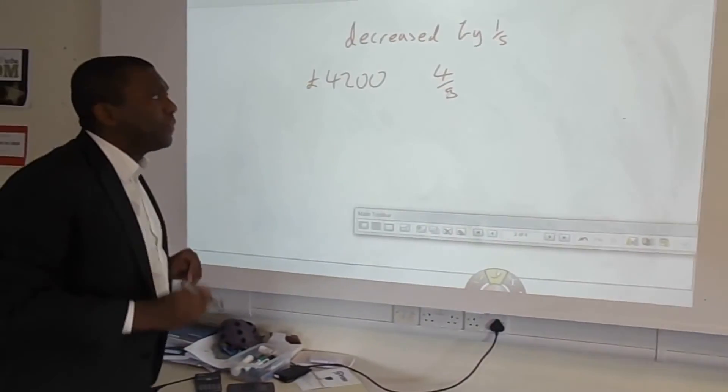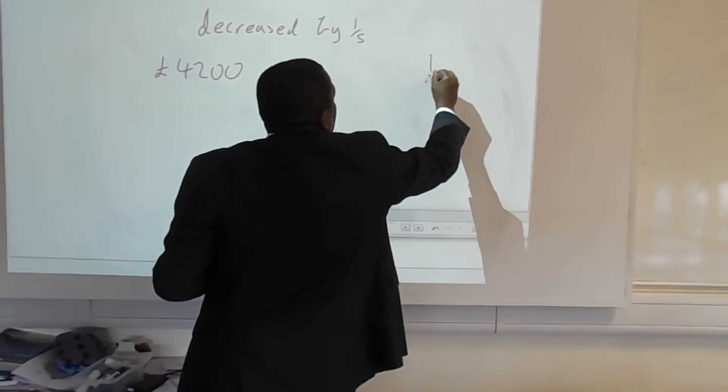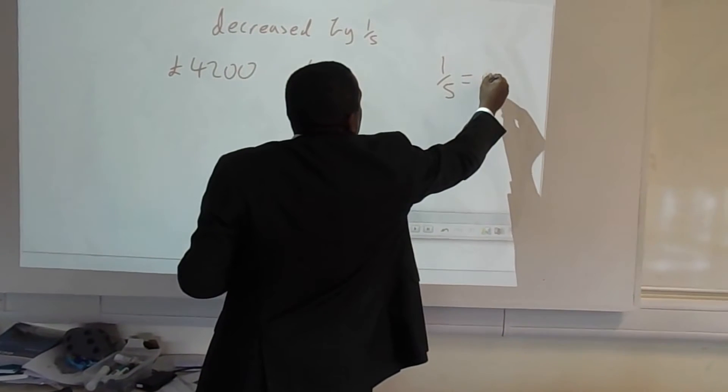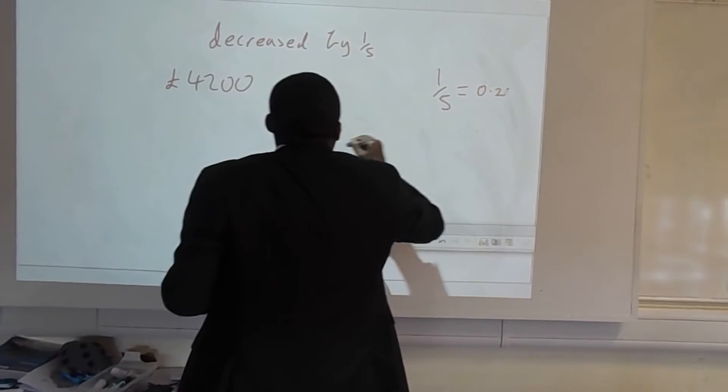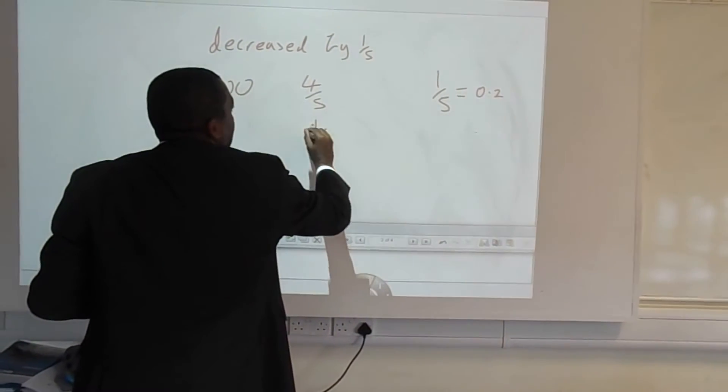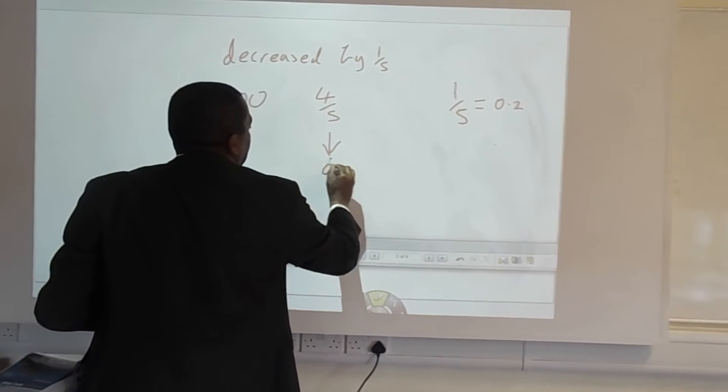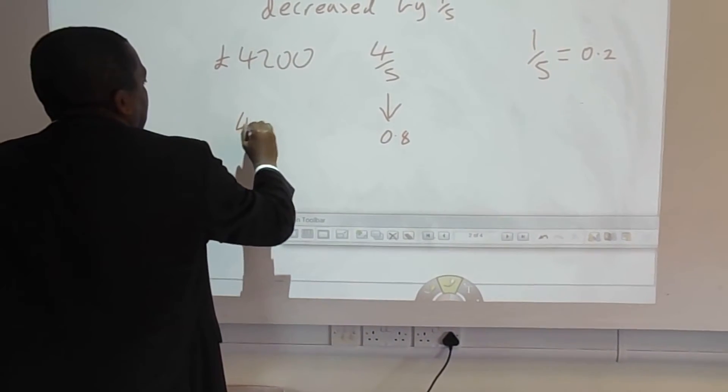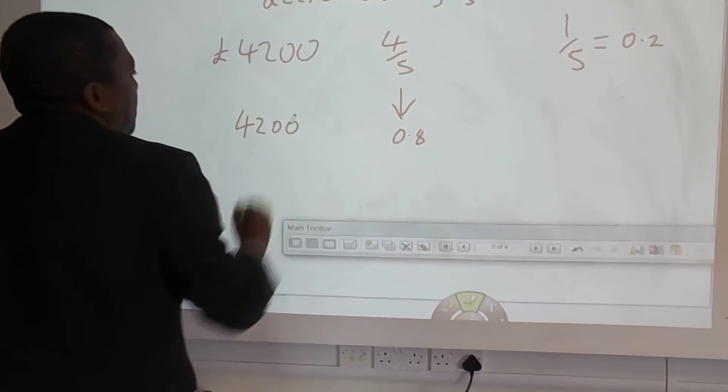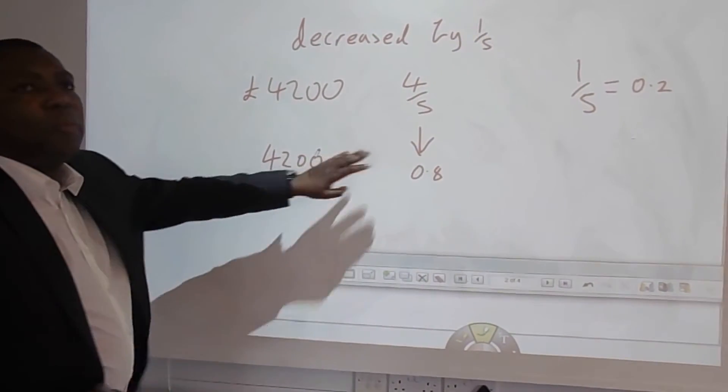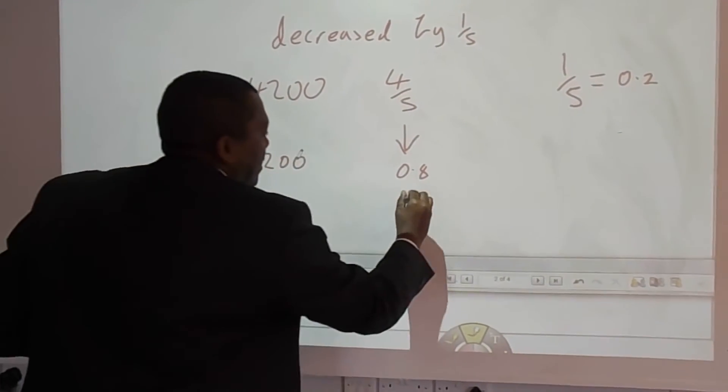And you should know that 1 fifth is 0.2. So 4 fifths must be, four lots of that, 0.8. So the car now is 80% of its value, because 0.8 is the same as 80%.